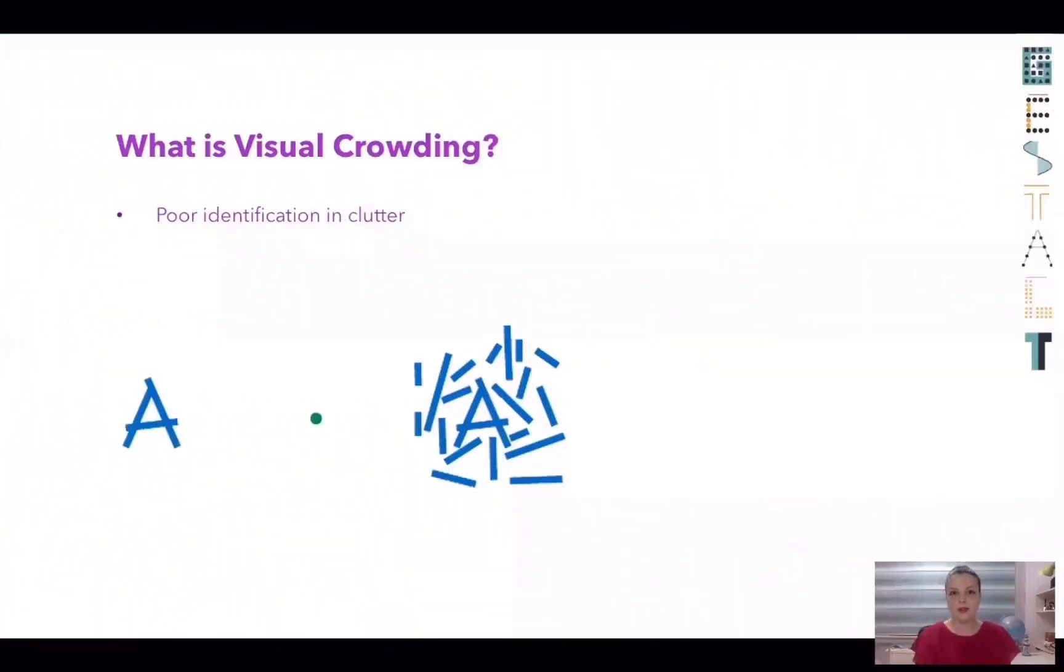First of all, I would like to explain what visual crowding is. As you can see on the left side, when the target is presented alone, it's easy to detect. Whereas when neighboring elements are presented, the perception of peripherally presented targets strongly worsens, what we call visual crowding.